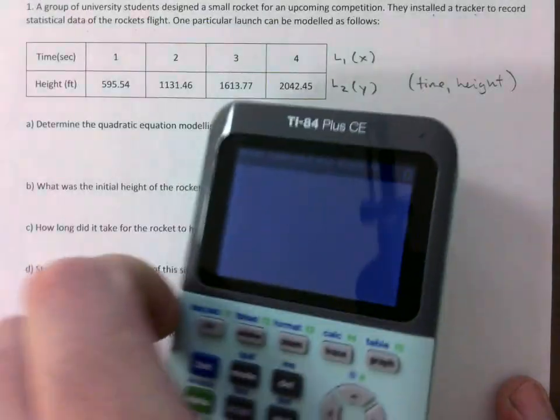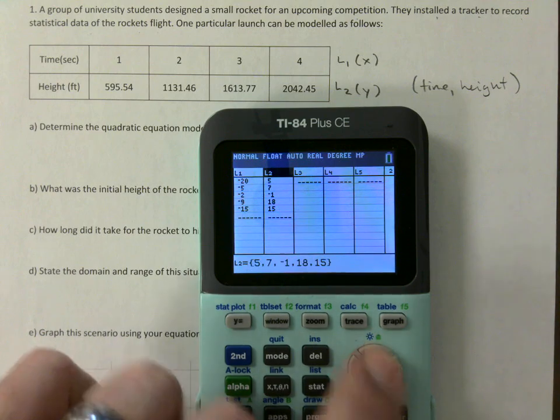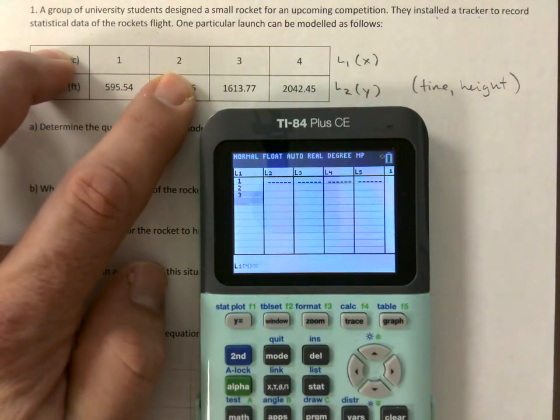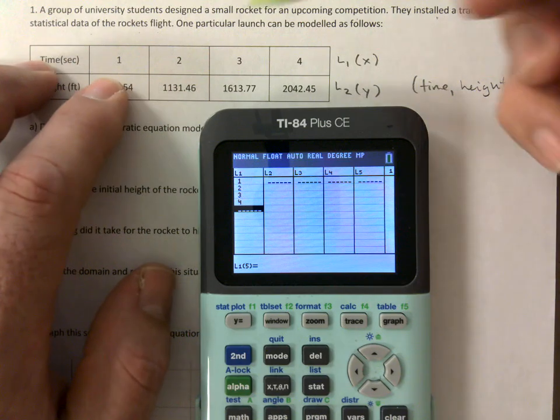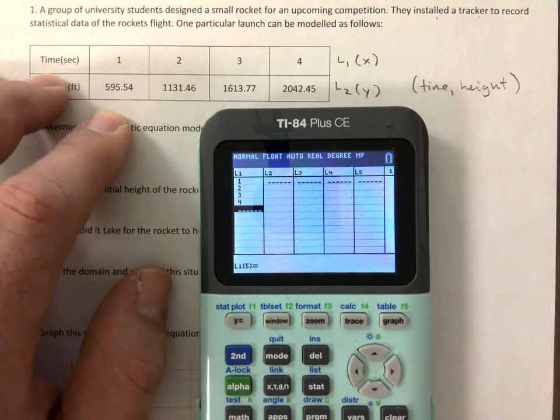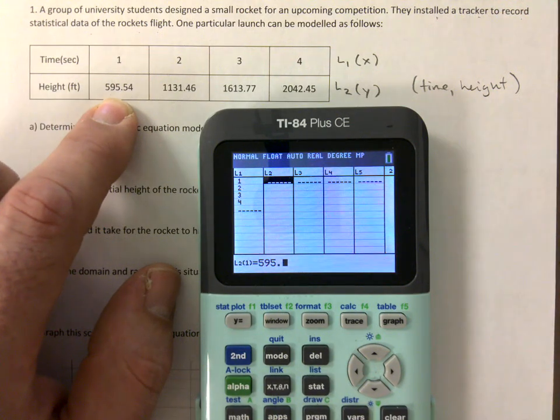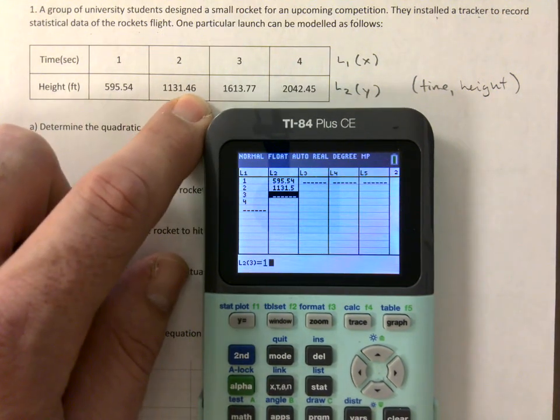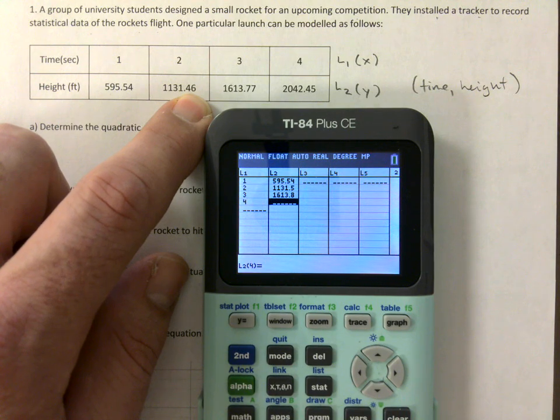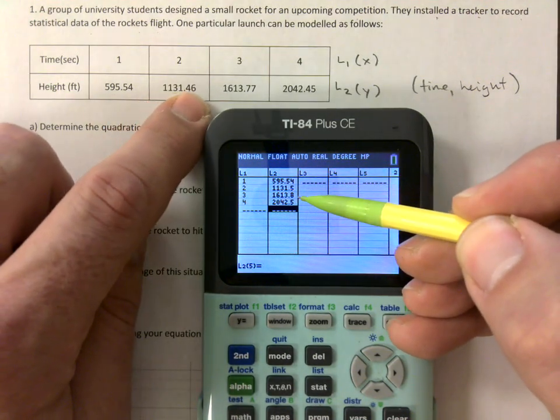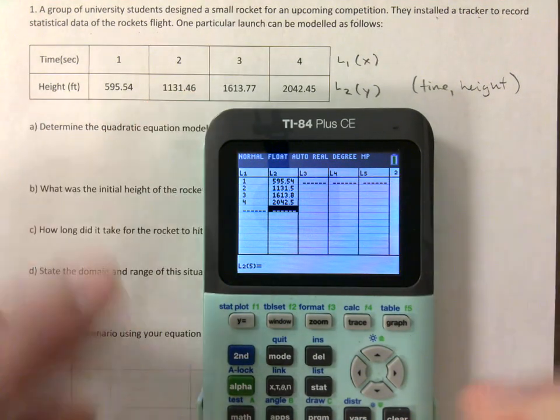So I will do this from scratch. I clear everything that's in there. Be careful with the time. It's not always going to be going up by one. It could jump. Just got to be very careful. So then it's 595.54, 1131.46. All right, so I'm just going to double check one more time.